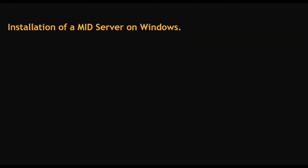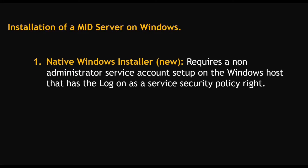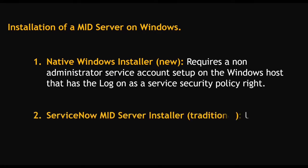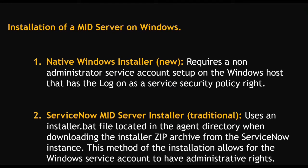There are two types of installations. The first is the native Windows installer, which requires a non-administrator service account set up on the Windows host that has the log-on-as-service security policy right. This was newly introduced from the Paris version. The second is the ServiceNow MID server installer — the traditional one — which uses an installer.bat file located in the agent directory when downloading the installer zip from ServiceNow. This method allows the Windows service account to have administrative rights. In the new native Windows installer, you only need the log-on-as-service account.